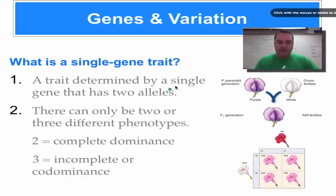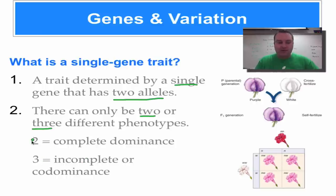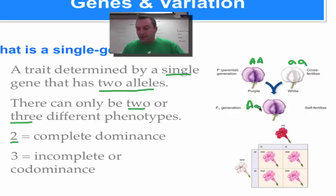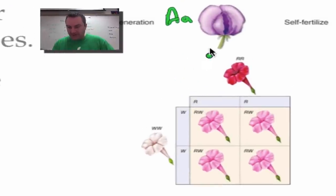A single gene trait is a trait determined by a single gene that has two alleles — think of a dominant allele and a recessive allele. There can only be two or three different phenotypes. With only two phenotypes you have complete dominance. For example, with a purple dominant allele (A) and a white recessive allele (a), homozygous dominant and homozygous recessive parents produce heterozygous offspring that all show the dominant purple phenotype.